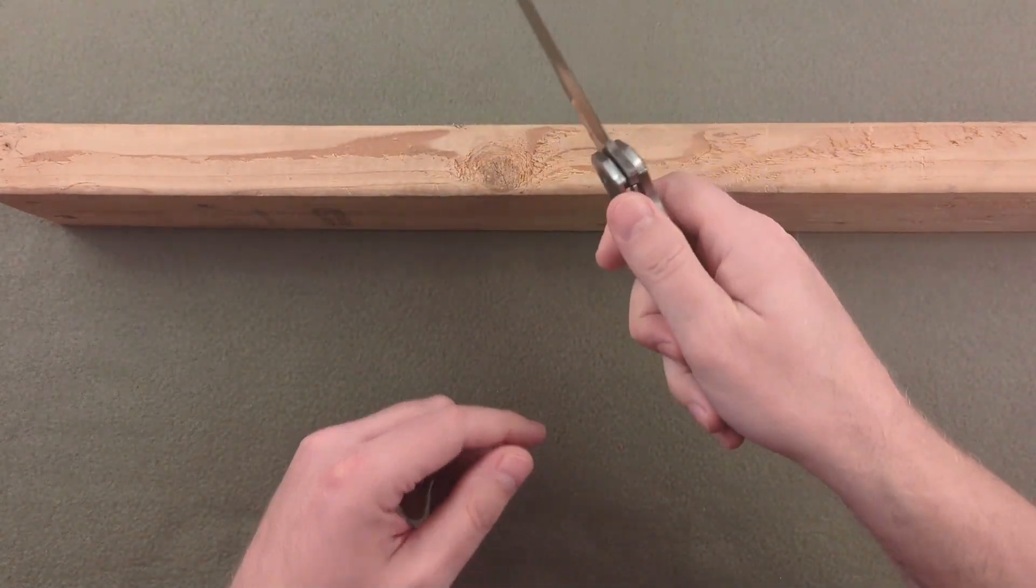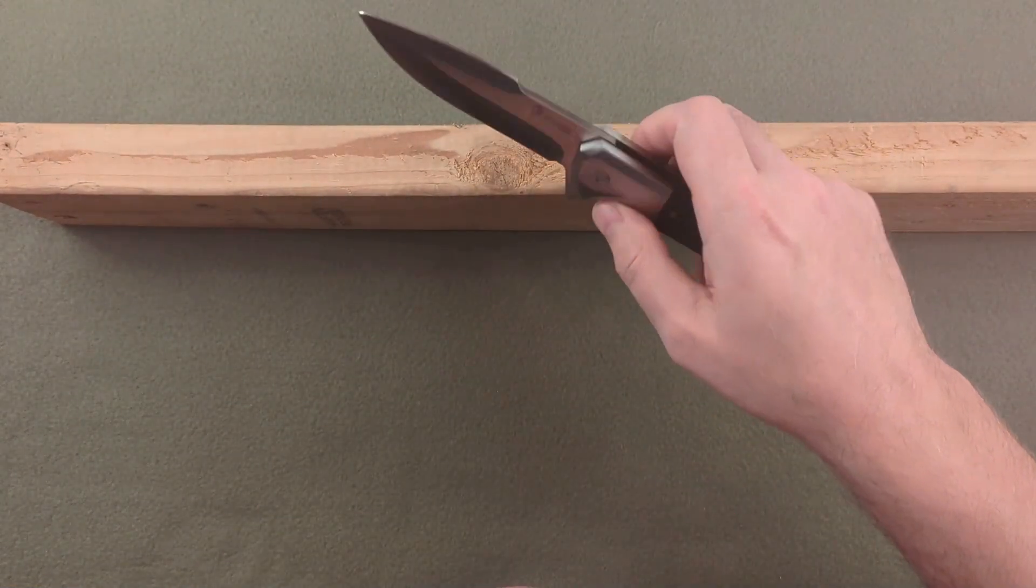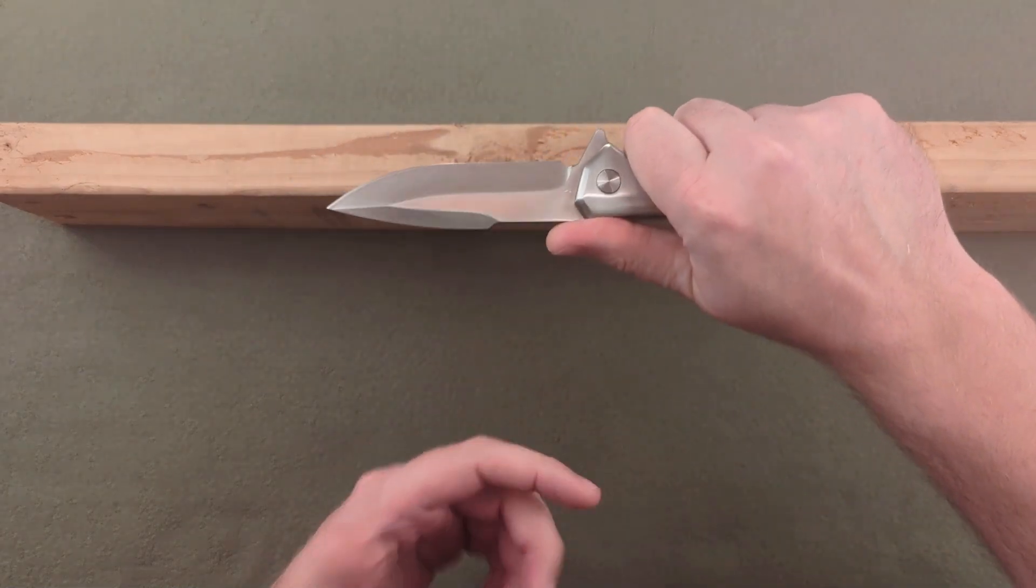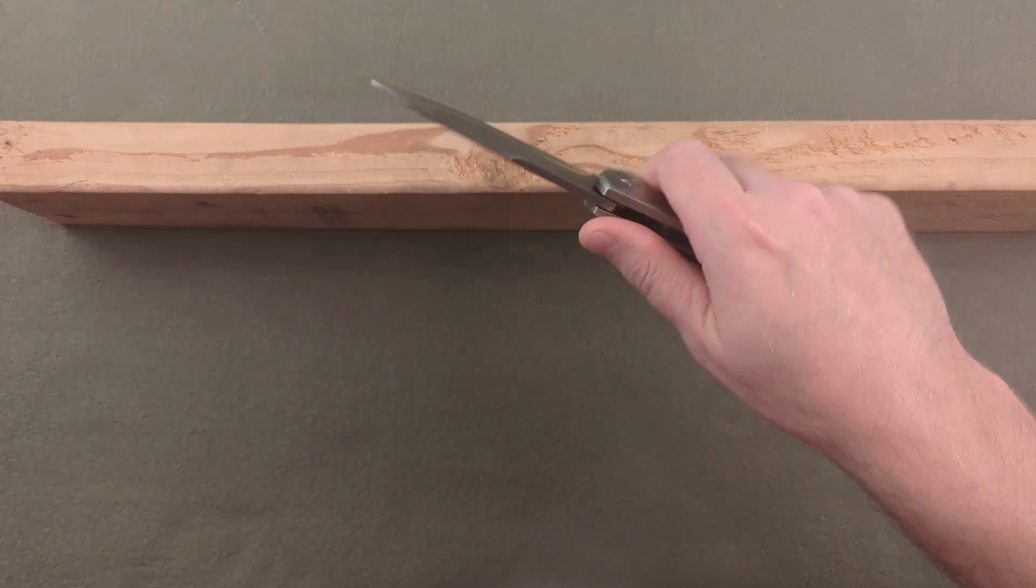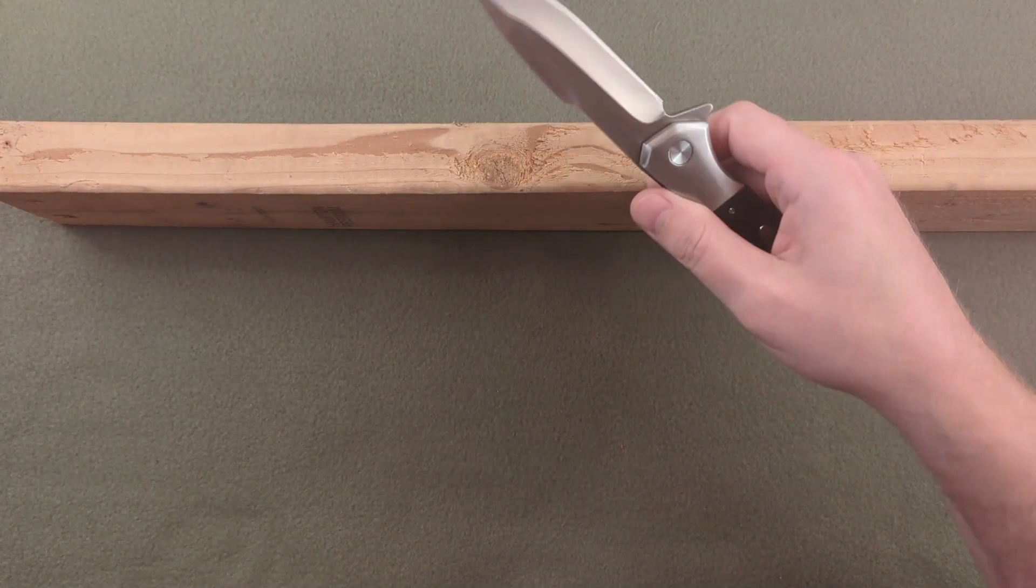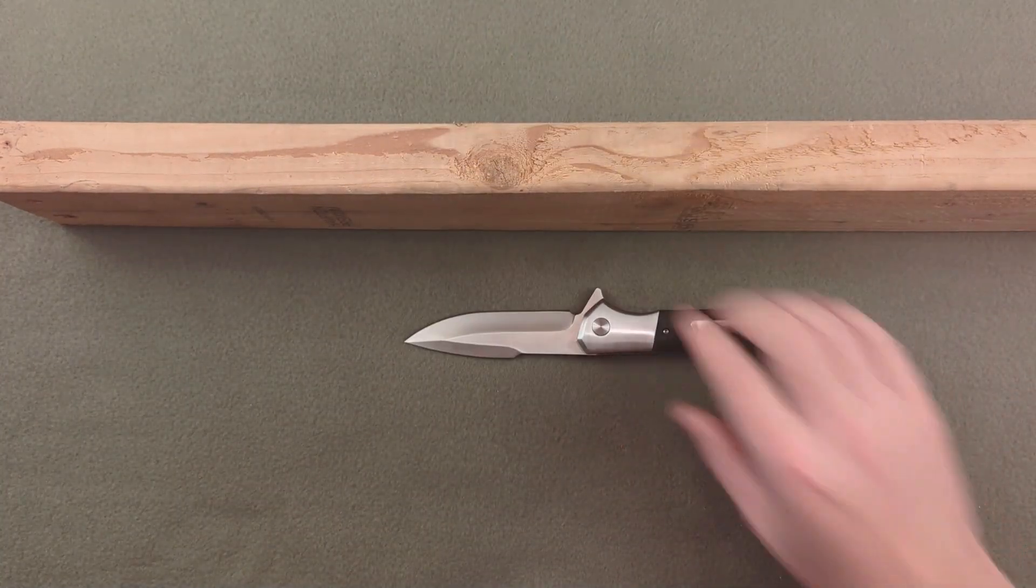So if smacking it on the spine doesn't cause it to close, then anything that you do in regular use isn't going to make that thing close on your hand either. It's not going to get stuck, and as you're trying to pull it out, it's not going to close on your hand. If a whack on the spine doesn't do that, then that's not going to do it either.